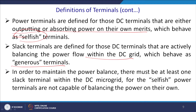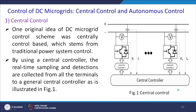The slack terminal mainly controls the DC microgrid voltage. In order to maintain power balance, there must be at least one slack terminal within the microgrid, since the selfish power terminals are not capable of balancing power on their own.